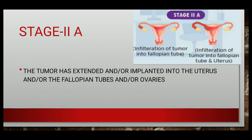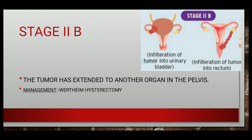In stage 2b, the tumor has extended to other pelvic organs. You can see from the figure that there is infiltration of tumor into the urinary bladder and into the rectum — both of these belong to stage 2b.